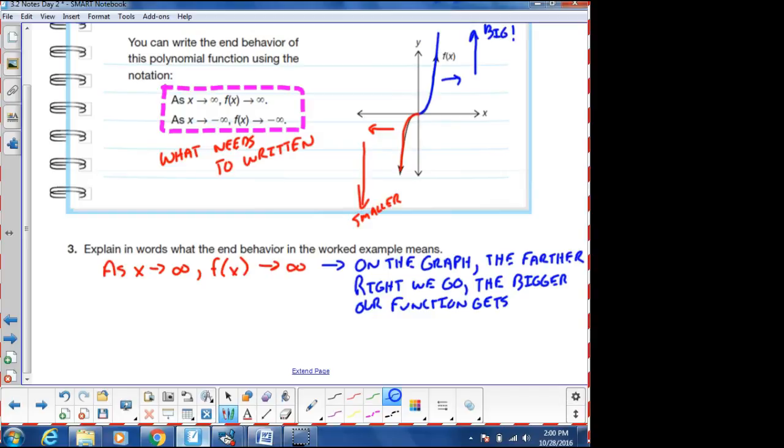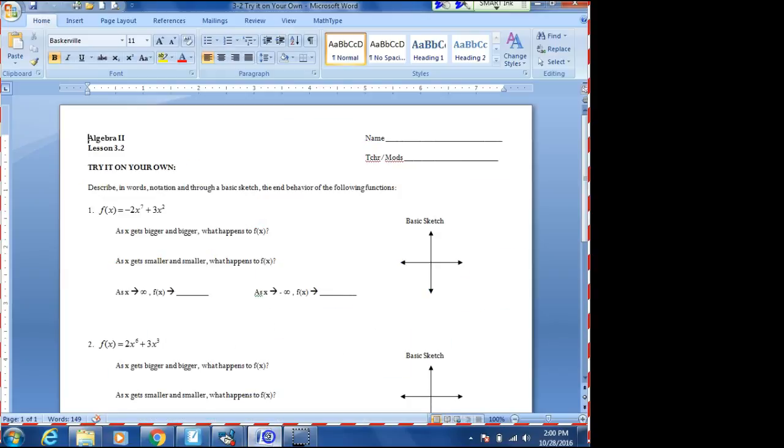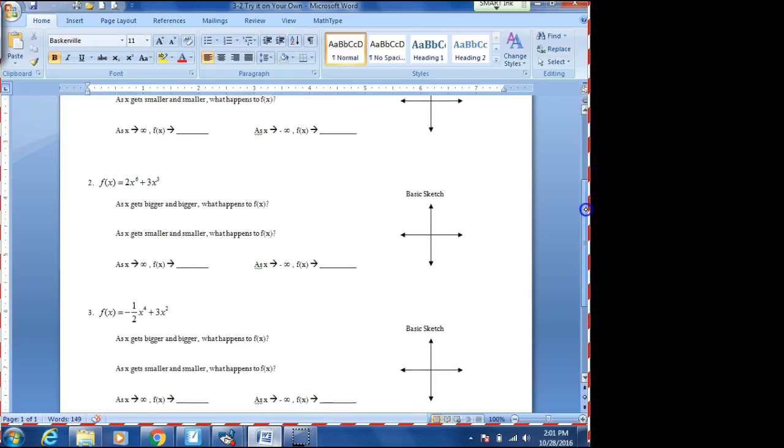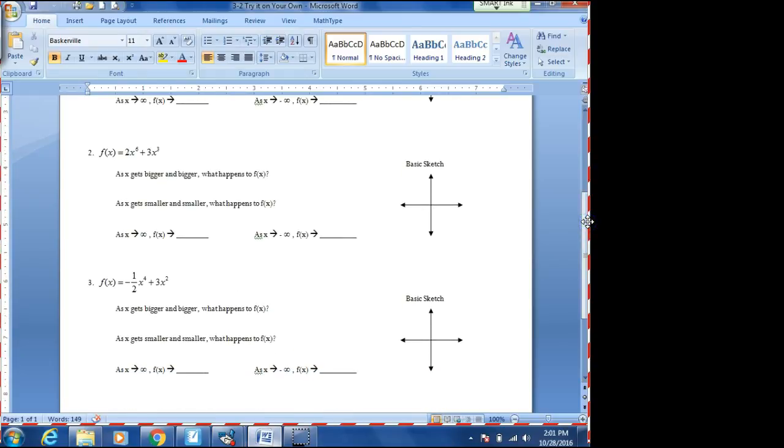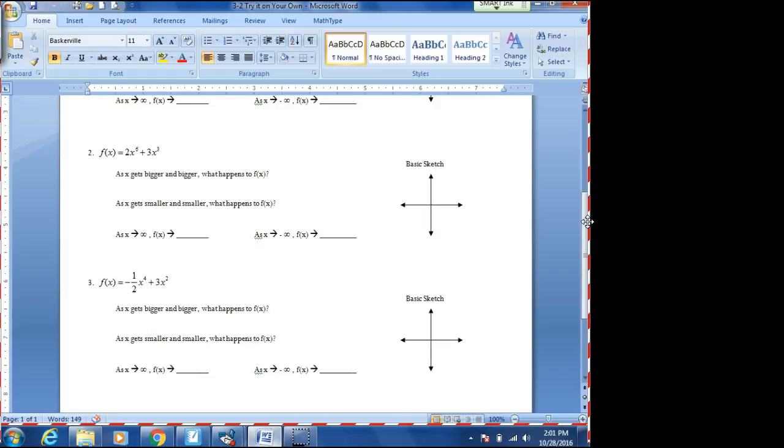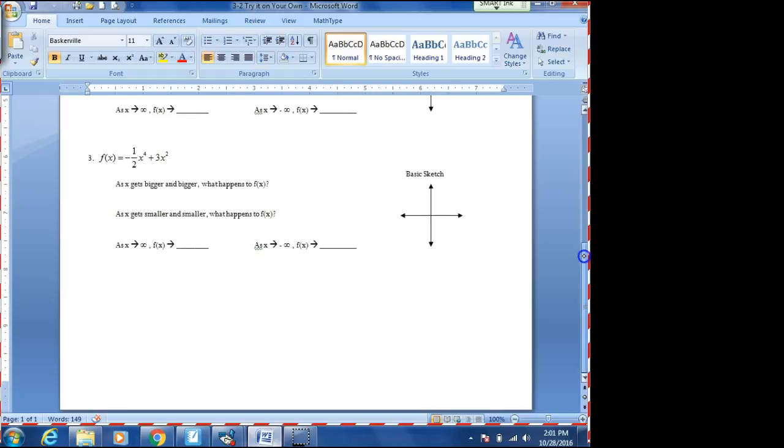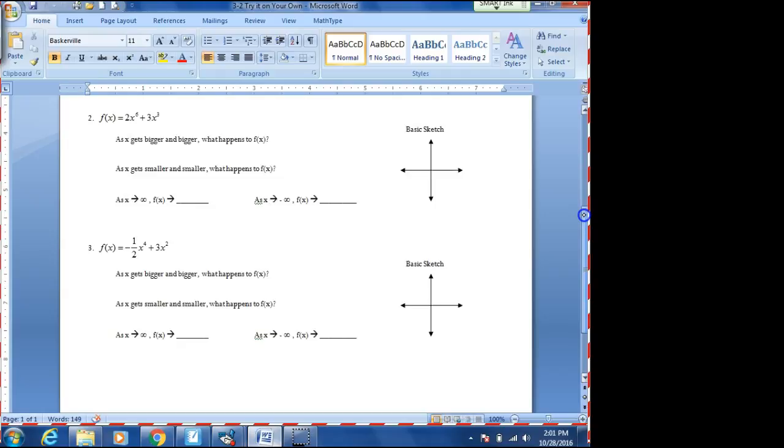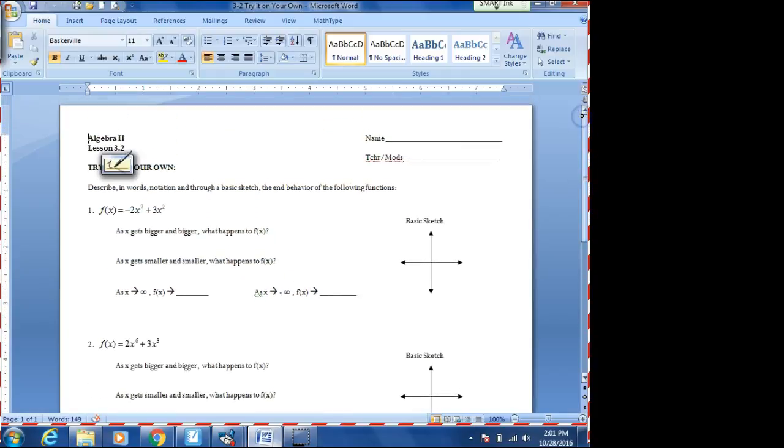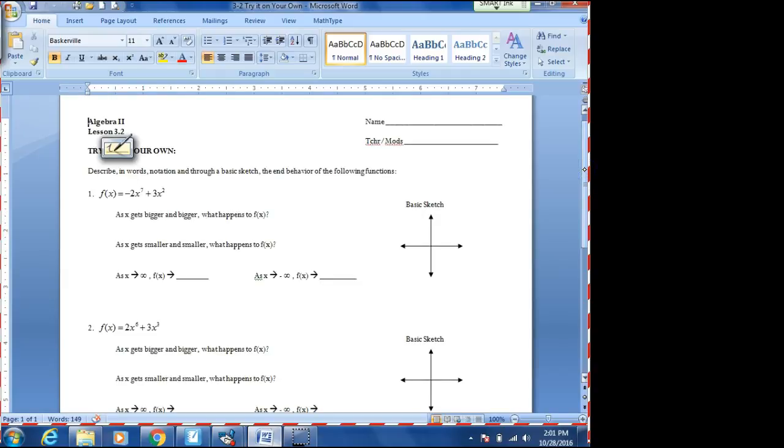Your homework for this evening, which you will get here momentarily, is going to be this page. I believe that it is yellow. It is 3.2, try it on your own, where we are asking you to look at the graphs. You can sketch them, a basic sketch. We're not asking for an exact graphing of this particular function. So you can look at those, look at what's going on there. You can verify it with a graphing calculator, and then I'm asking, or we're asking for what happens as x gets bigger and bigger in both word notation and in what's called end behavior notation. So you now have the rest of the time to be working on lesson 3.2. Thanks for listening to our very first screencast.